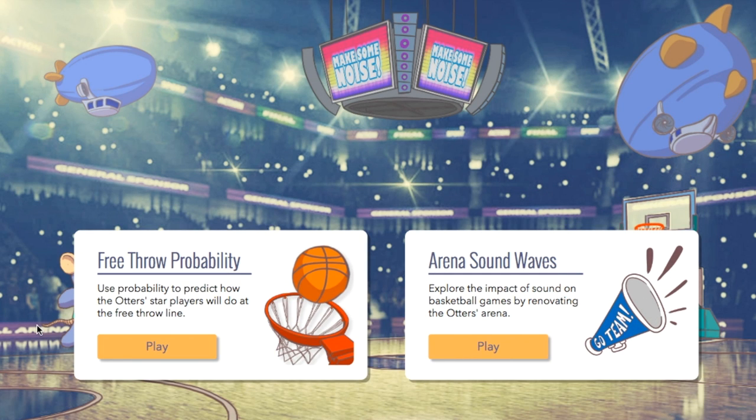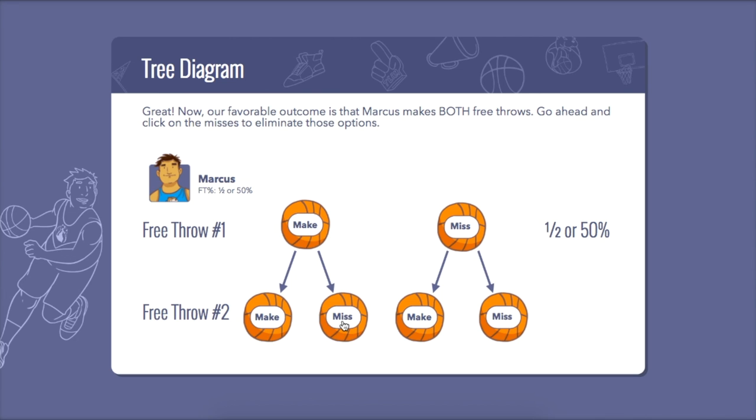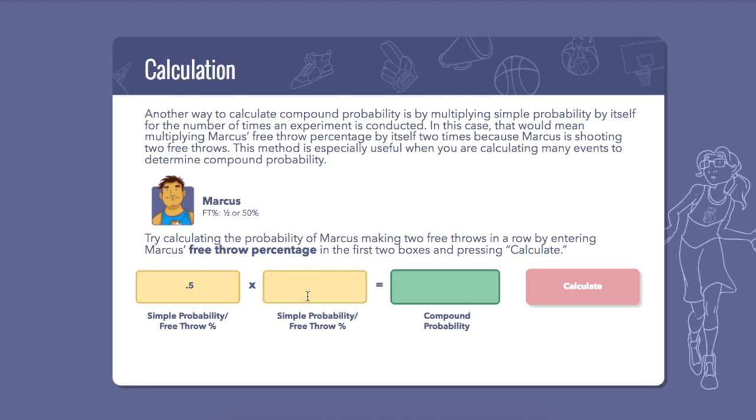The course is comprised of two lessons. Free Throw Probability uses the concept of probability to predict how the team's star players will do at the free throw line.